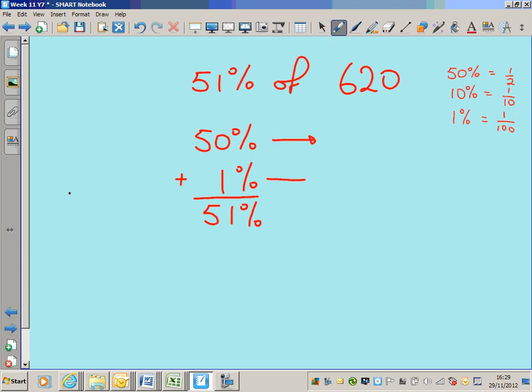Let's find 50% of 620. 50% is the same as a half, and what is half of 620? Dead right, 310. 1% is the same as 1 hundredth. So we find 1 hundredth of something by dividing by 100. We have to do 620 divided by 100. When you divide by 100, the decimal point and the number moves two spaces to the left. One, two. So that means 1% is going to be 6.2.